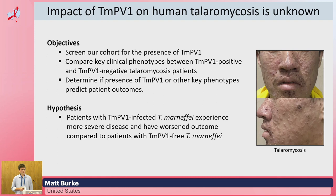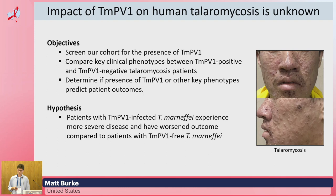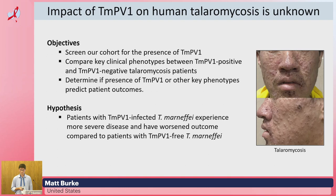We know what TMPV-1 does in a mouse model, but it's pretty unknown how it affects human talaromycosis disease. To help answer this, we wanted to screen our large cohort for the presence of TMPV-1 and then compare key clinical phenotypes between patients with mycovirus and patients without mycovirus, and determine whether any of these clinical phenotypes might help predict patient outcomes. Our hypothesis was that patients with TMPV-1 infected Talaromyces experience more severe disease and have worsened outcomes compared with patients that have TMPV-1 free Talaromyces.